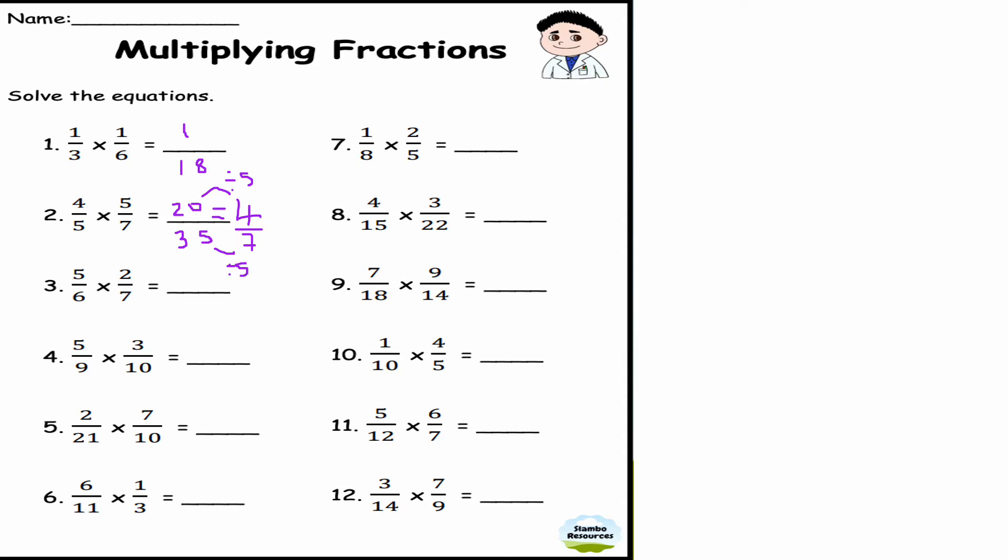This is question number three: 5/6 times 2/7. Well, 5 times 2 is 10, 6 times 7 is 42. 10/42, I can divide top and bottom by 2 because it's even numbers, I get 5/21.